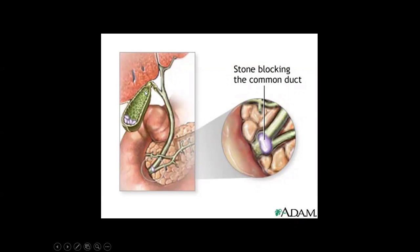Here we can see the gallbladder with multiple calculi, cystic duct, common bile duct, pancreatic duct, and accessory pancreatic duct. In this picture you can see a stone in the distal portion of the CBD.